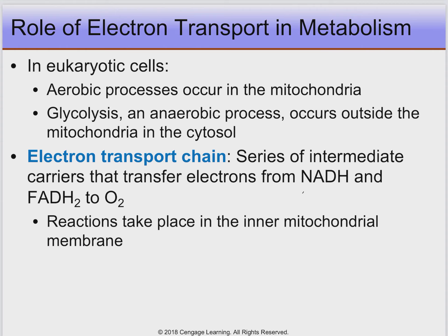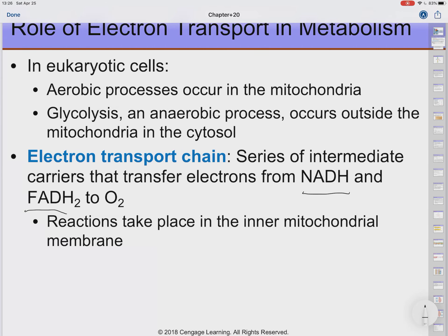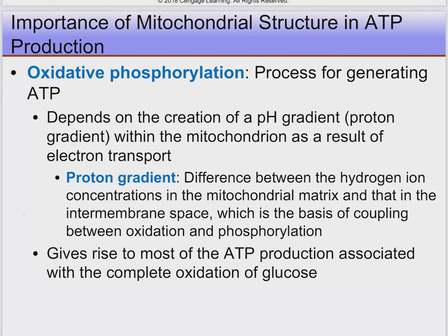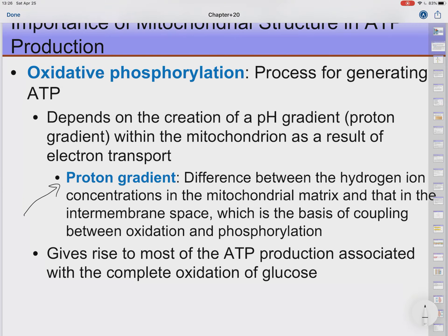The electron transport chain is ideally just a way of pumping protons. It's going to be a series of redox reactions. The goal is to pump as many protons as possible, to create as big a pH gradient as possible, because that's what ultimately drives ATP synthesis. There are a few complexes in the electron transport chain where electron carriers give their electrons to proteins that pump hydrogens. Hydrogen ions — that's how we measure pH, the negative log of hydrogen ion concentration — these are the protons being pumped.